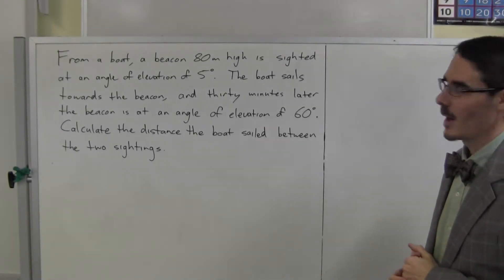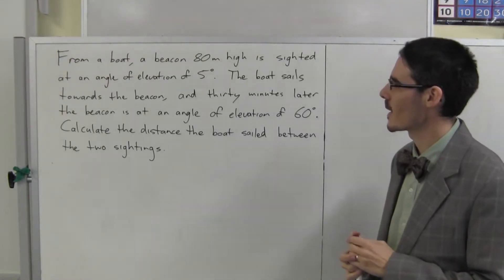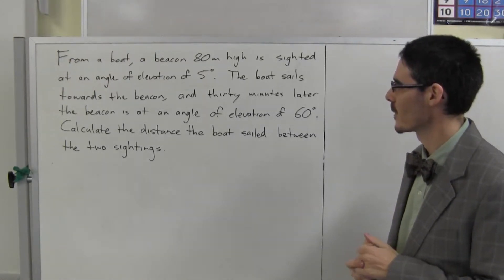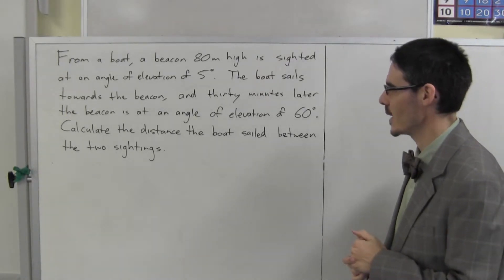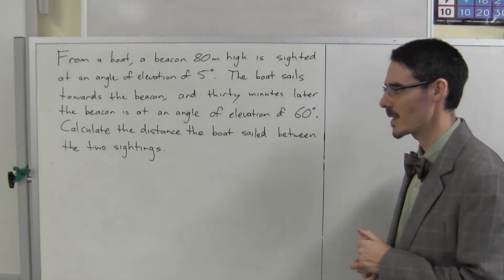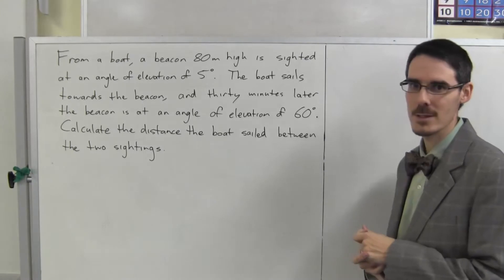From a boat, a beacon 80 metres high is sighted at an angle of elevation of 5 degrees. The boat sails towards the beacon and 30 minutes later the beacon is now at an angle of elevation of 60 degrees. Calculate the distance the boat sailed between the two sightings.